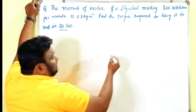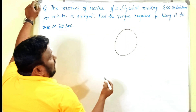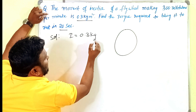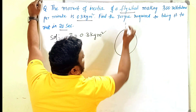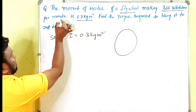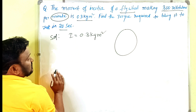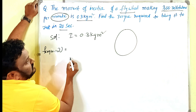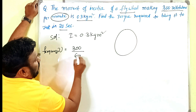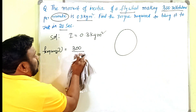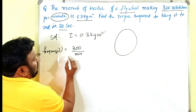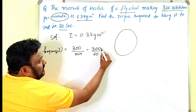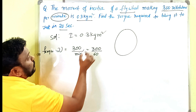Here we have a flywheel with moment of inertia I = 0.3 kg·m². The flywheel makes 300 revolutions per minute. The number of revolutions per minute is the frequency, so ν = 300 per minute, which means 300 revolutions per 60 seconds. We need to find the torque required to stop it.